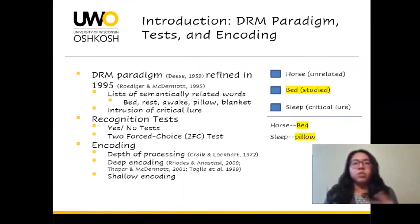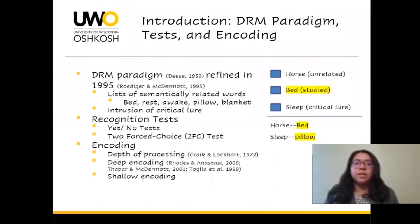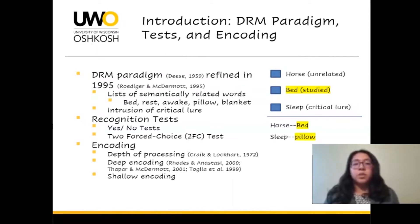All words from all the lists that the participant studied are used, not just from one list. For encoding, it's been suggested that memory accuracy depends on the depth that items are processed. This is where deep and shallow encoding come into play. Deep encoding occurs when items are deeply processed so more associations can be made, and shallow encoding occurs when items are superficially processed and fewer associations are usually made.